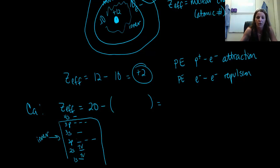So we have 1, 2, 3, 4, 5, 6, 7, 8, 9, 10, 11, 12, 13, 14, 15, 16, 17, 18. So we have 18 electrons right there. So 20 minus 18, I probably should fill out there too, so we have our two valence electrons right there. 20 minus 18 gives us an overall effective nuclear charge of 2.